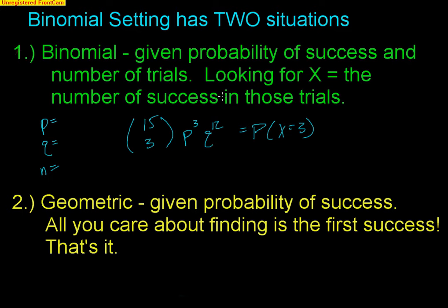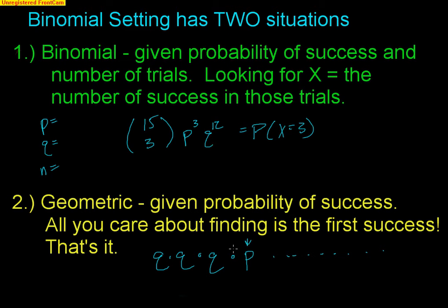That means everything else leading up must have been a failure. Because if your first success, for example, happens on the fifth trial, that means the first one must have been a failure Q, the second one must have been a failure, the third one must have been a failure, and then finally your fourth trial was your first success. At that point, we're done. All I cared about was that first success happened there — everything else prior was a failure. That's what we call a geometric situation. You still have to be independent and your probability of success still has to stay constant, but you're not given a set number of trials. Geometric, all you care about is your first success.